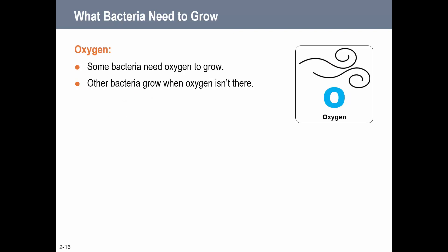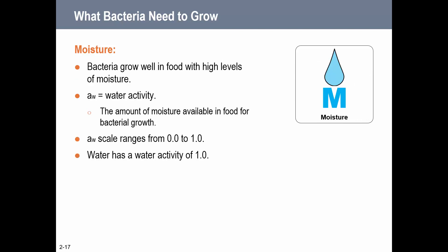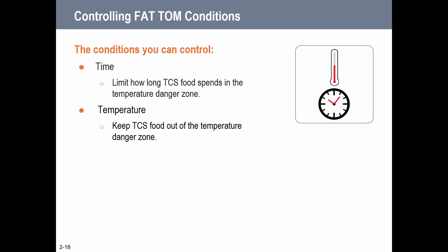The O stands for Oxygen - some bacteria need it, some don't. It's helpful from a scientific perspective to understand how to control each type, since some bacteria may thrive more in canned foods or reduced-oxygen environments. The M stands for Moisture. Bacteria tend to grow well in foods with a higher level of moisture, measured as water activity on a scale of 0 to 1, with 1 being water. We can't always control food moisture or oxygen, but what we can control is time and temperature - keeping food out of the danger zone.